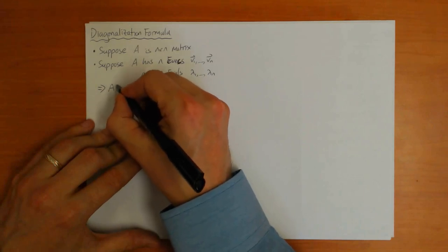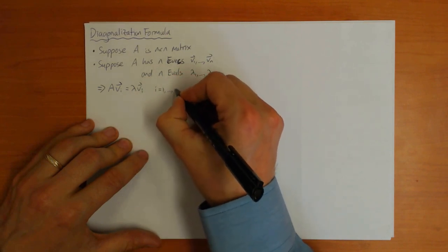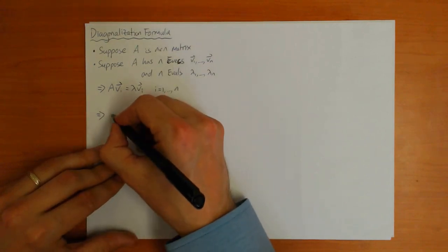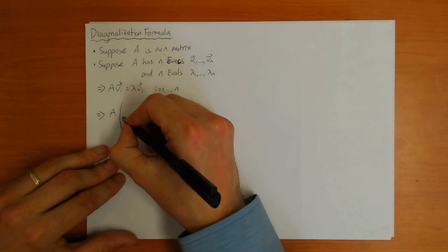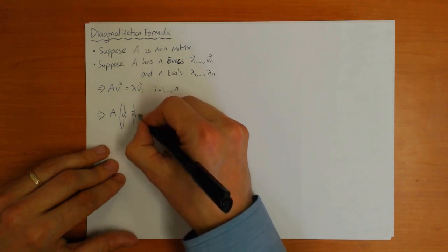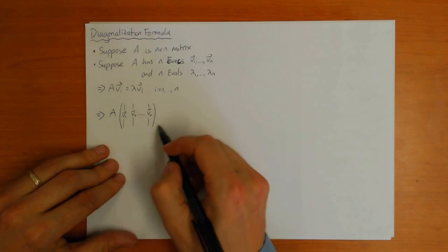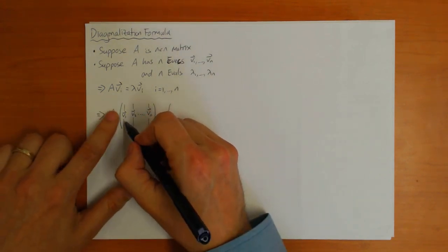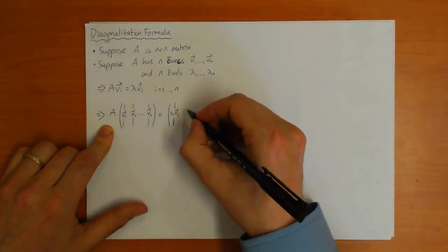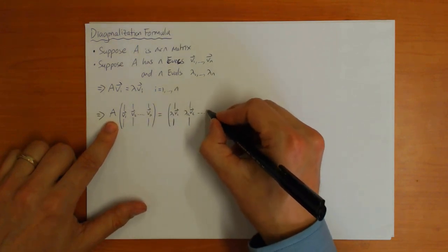The fact that these are eigenvectors and eigenvalues means you have the equations A times vi equals lambda i times vi, for i going from 1 up to n. You can write all of these equations as a single matrix equation: the matrix A multiplied by a matrix with eigenvectors v1, v2, up to vn in its columns. This gives lambda 1 v1 in the first column, lambda 2 v2 in the second column, and so on.